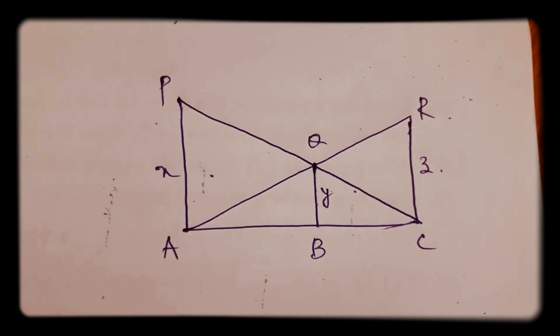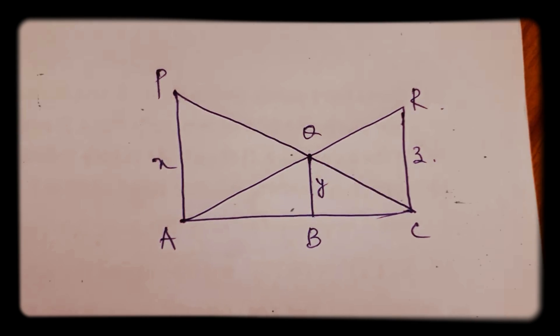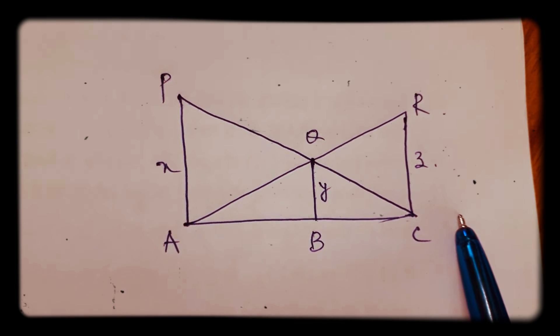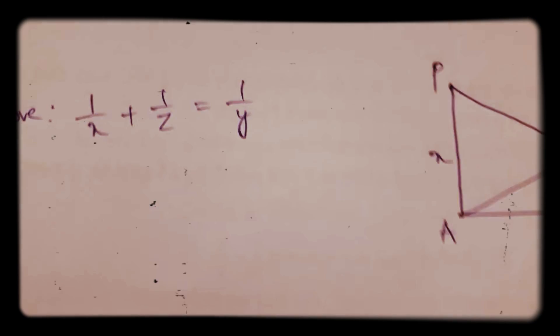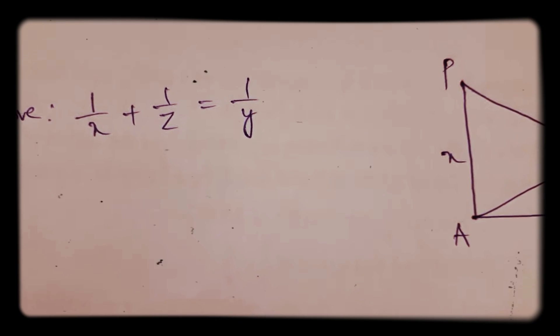Here PA, QB, and RC are perpendicular to AC. We need to prove 1/X + 1/Z = 1/Y.